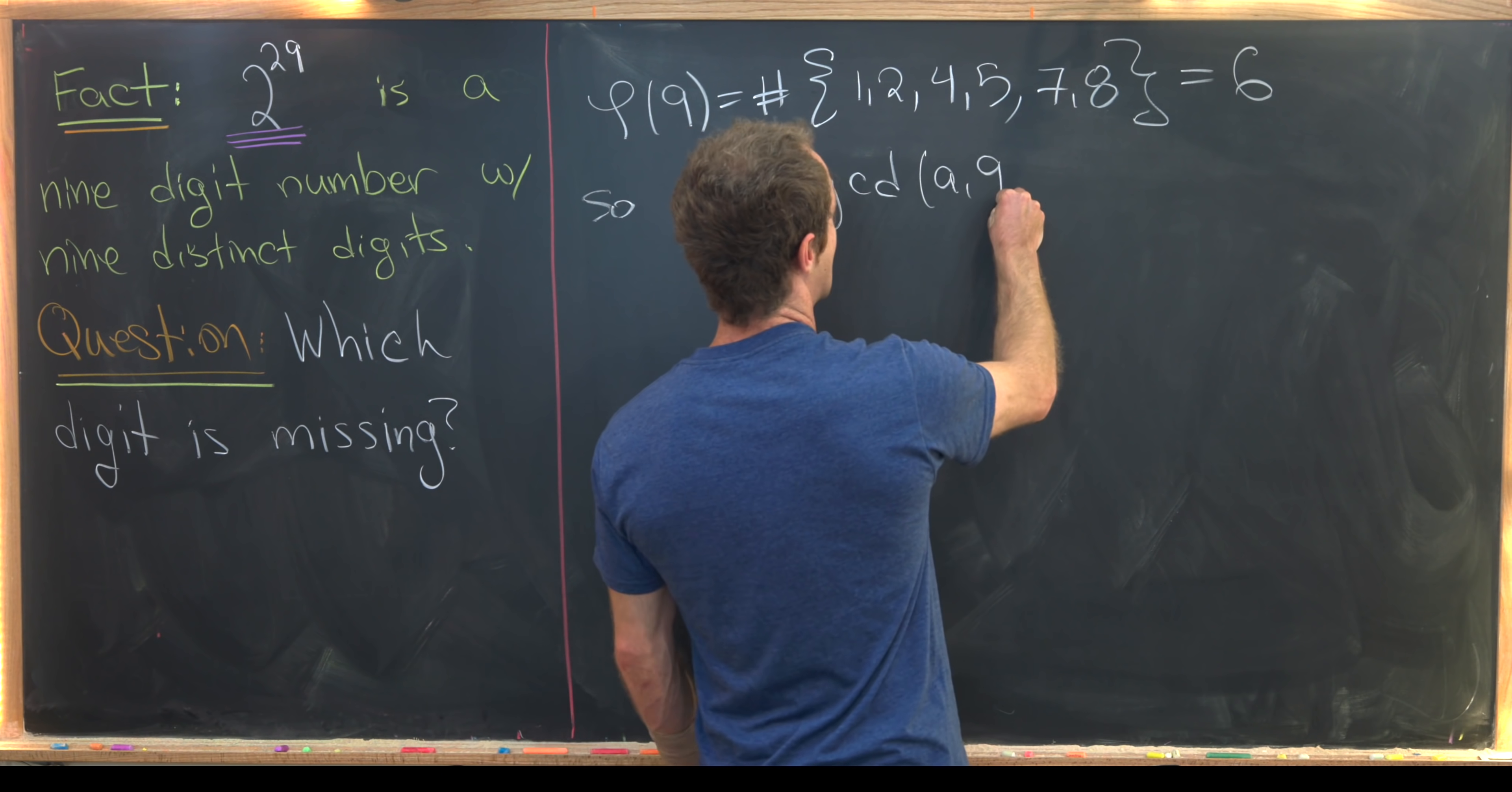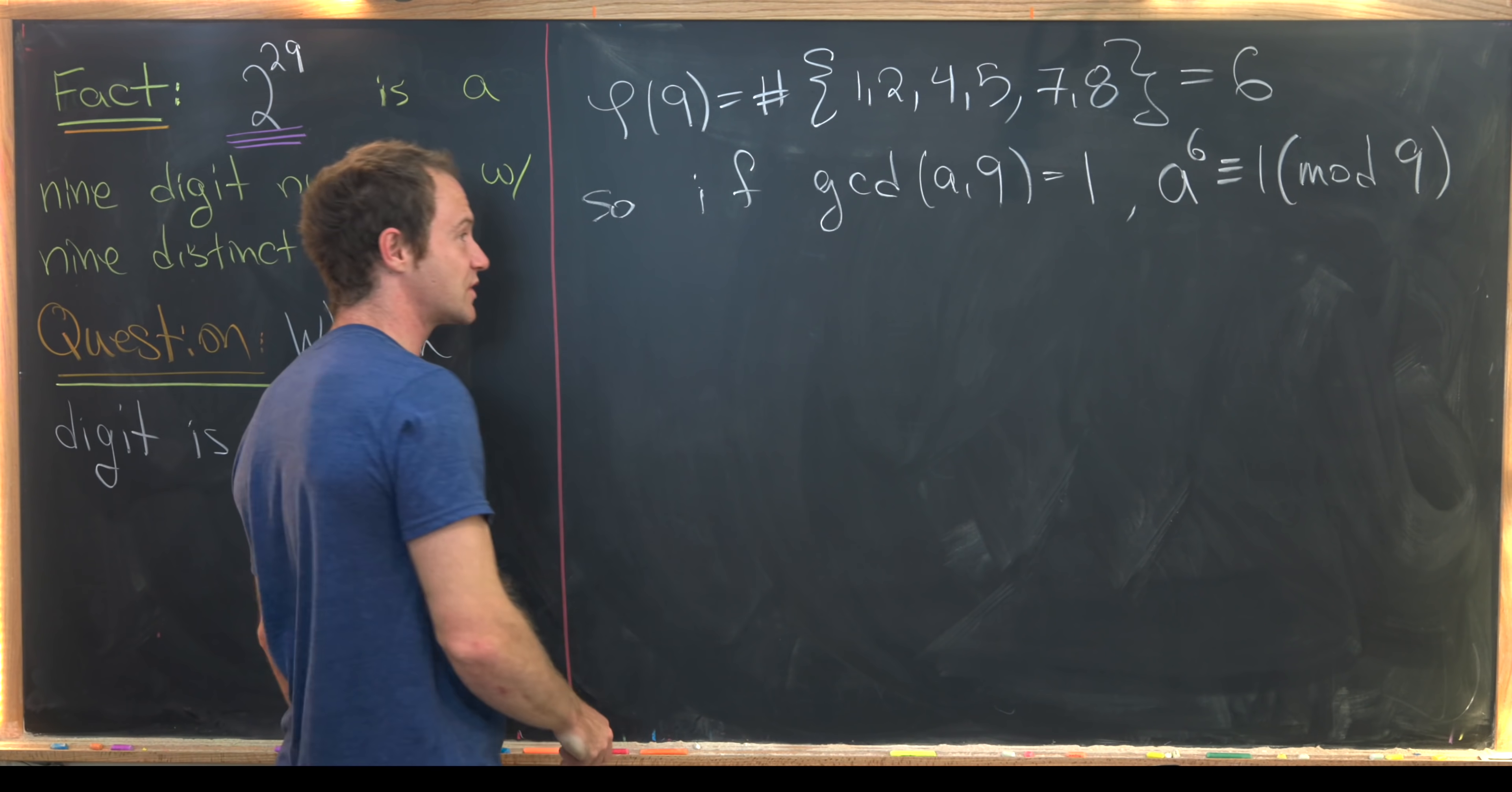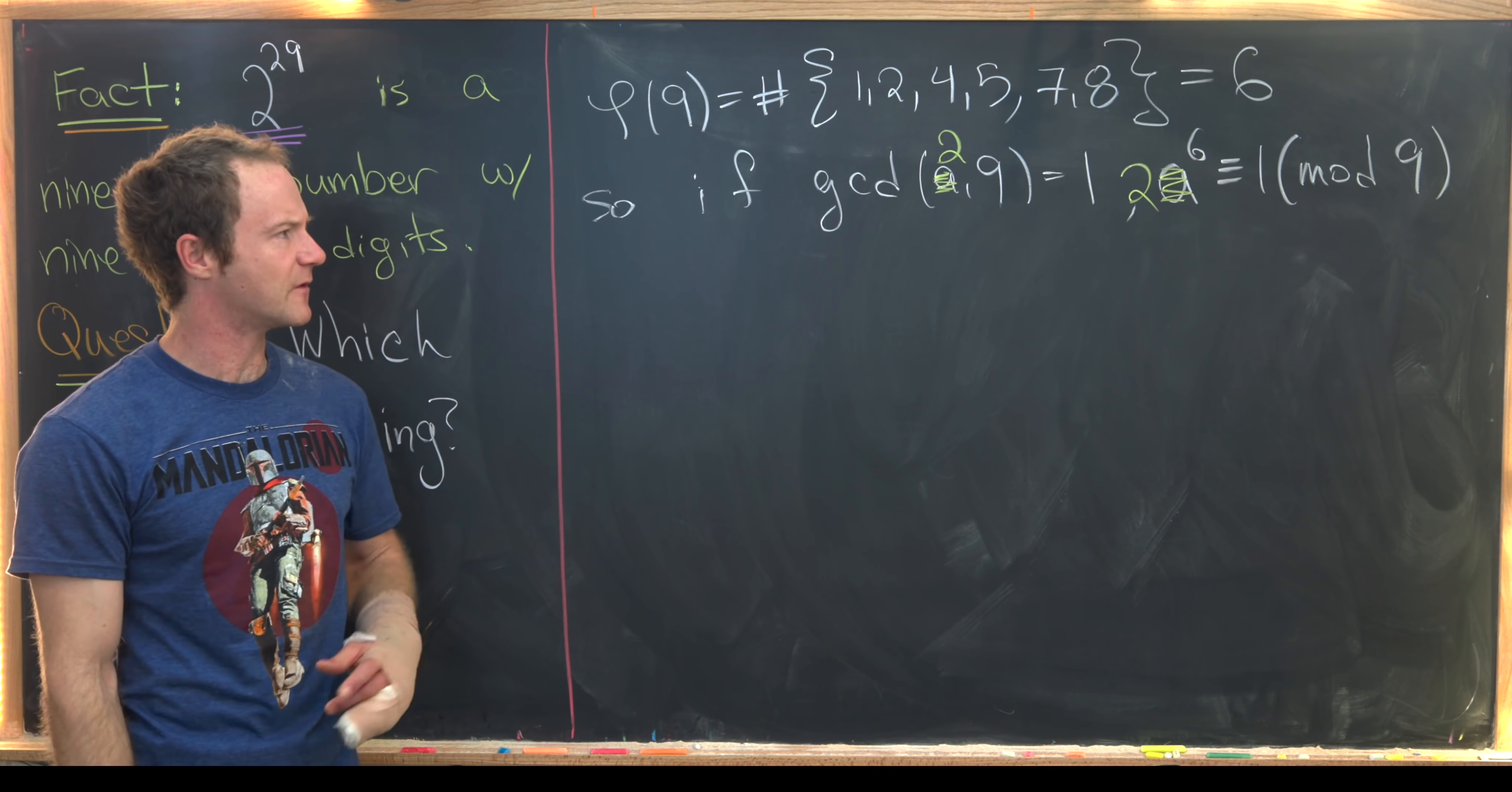So if the gcd of a and nine is equal to one, we know a to the six is congruent to one modulo nine. So that follows from Euler's theorem. So in particular, we know that the number two is relatively prime to nine, so that means two to the six is congruent to one mod nine.